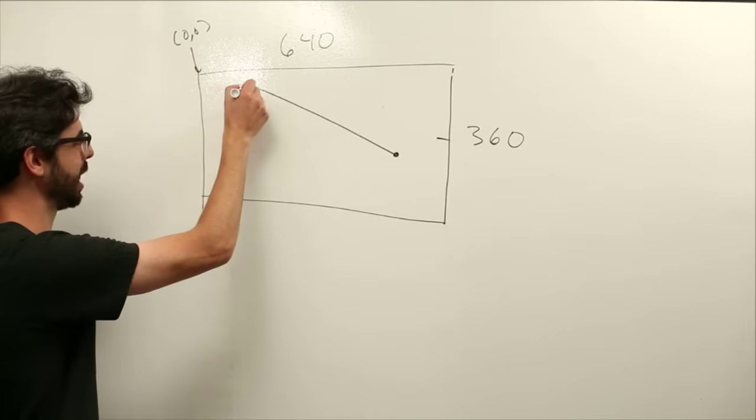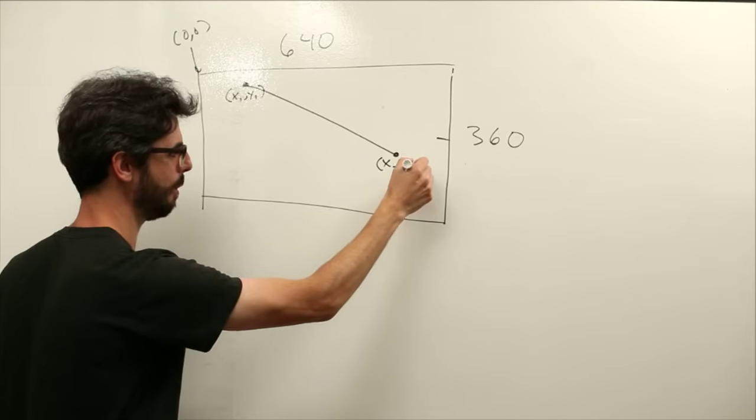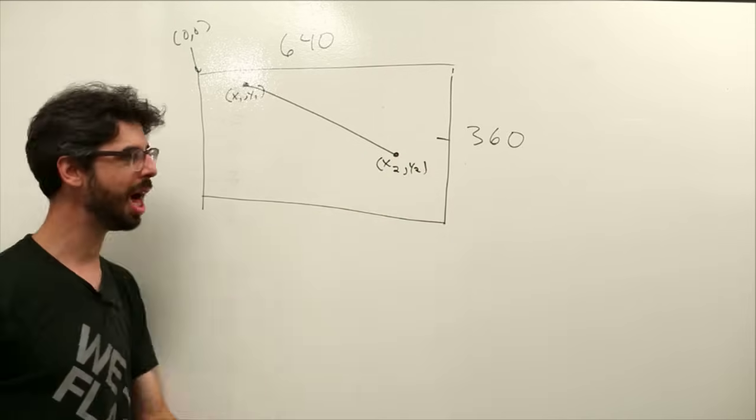What do we need to define how to draw a line? A line is a bunch of pixels between point A and point B. We can call this point A, we can call this point B. What do we need to define each one of those points? An x, y. We might say this is x1, y1, and this is x2, y2.